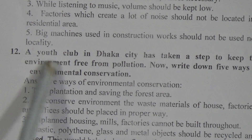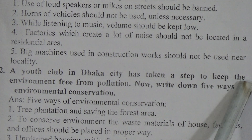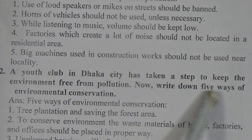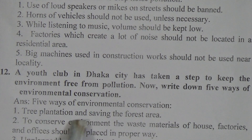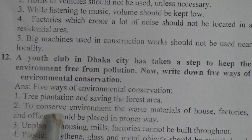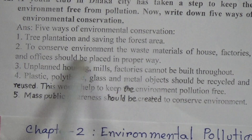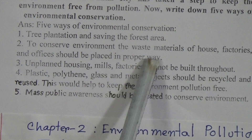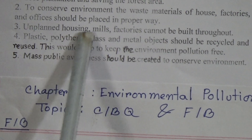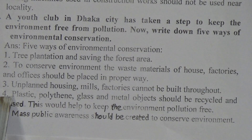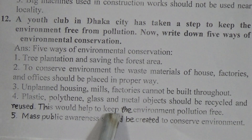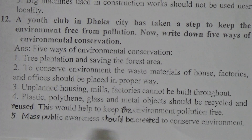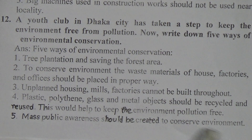Question 12: A youth club in Dhaka city has taken a step to keep the environment free from pollution. Write down five ways of environmental conservation. The answer — five ways of environmental conservation: first, tree plantation and saving of forest area; second, waste materials of houses, factories and offices should be disposed of in a proper way; third, unplanned housing, mills and factories cannot be built anywhere; fourth, plastic, polythene, glass and metal objects should be recycled and reused, this would help keep the environment pollution-free; fifth, mass public awareness should be created to conserve the environment.